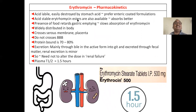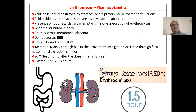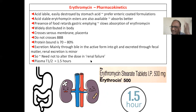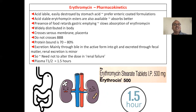Erythromycin pharmacokinetics: it is acid labile and easily destroyed by stomach acid; acid-resistant forms are available for better absorption. Food retards gastric emptying and slows absorption. It is widely distributed in the body but does not cross the blood-brain barrier. It is 70–80% protein-bound. Excretion is mainly through bile, so dose adjustment is not needed in renal failure. Plasma half-life is 1.5 hours.